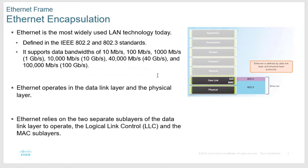Ethernet comes in all kinds of cable types. Category 3 is 10 megabits per second, category 5 is 100 megabits per second, and category 6 is 100 or 1000 megabits per second. There are also other standards that go all the way up to 40 gigabits per second and even 100 gigabits per second.